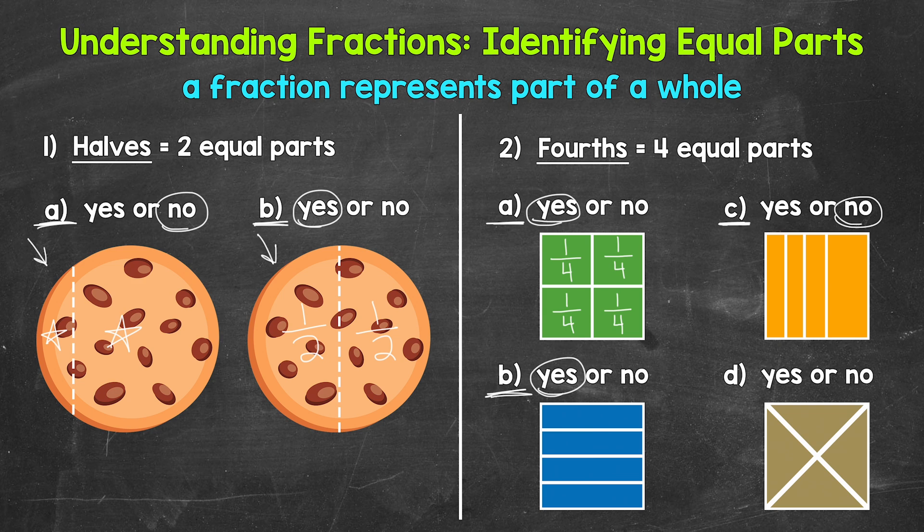Lastly for number two, let's move on to D. Do we have fourths here? Yes, each part is equal — each part is the same size. So yes, each of those four equal parts is one-fourth of the whole. So again, yes, we have fourths here. Let's move on to some more examples.